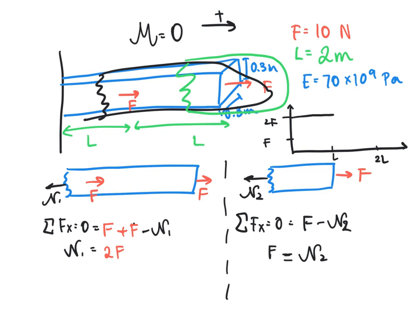At L, it passes the first force and drops to F. That's what the normal force curve looks like.